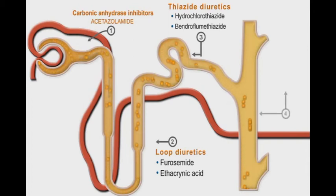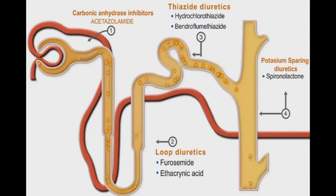The last diuretic group is potassium sparing diuretics. Spironolactone, a famous drug of this group, works through antagonizing aldosterone effect, whereas other drugs such as ameloride inhibit potassium excretion through aldosterone-independent mechanisms.